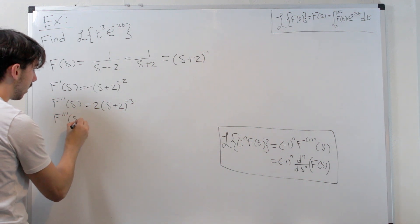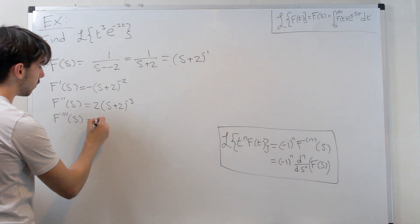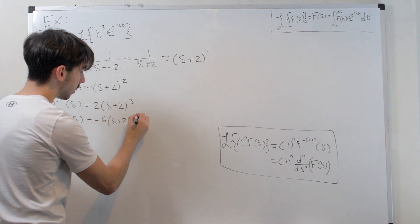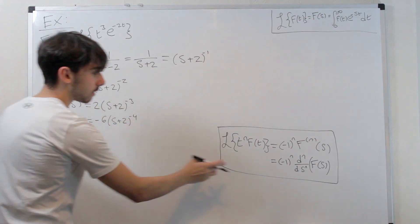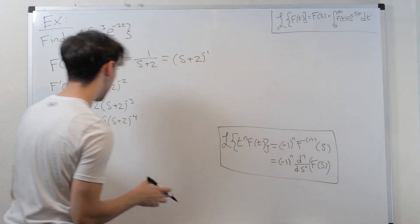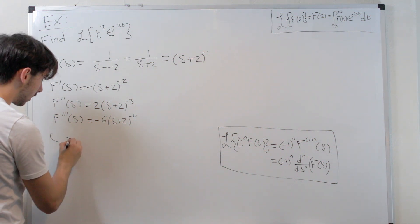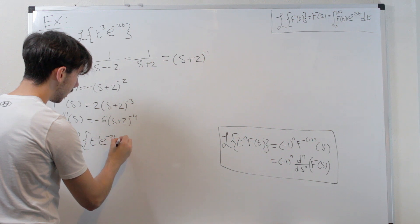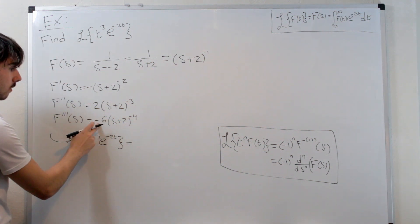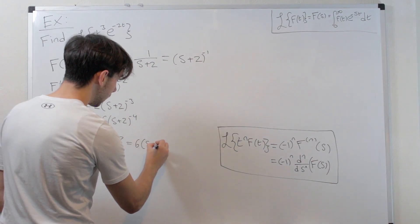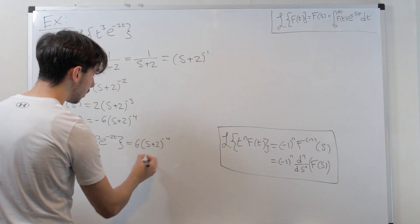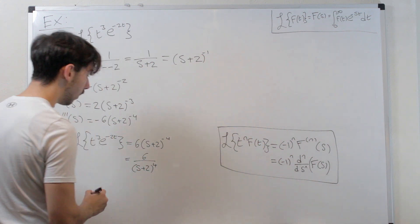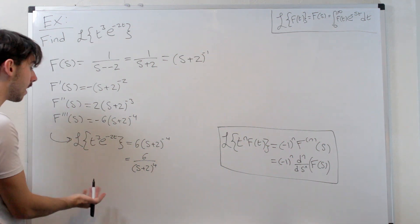And finally the third derivative of F of s: minus 3 times 2 is minus 6, derivative of the inside is 1, so we get minus 6 times s plus 2 to the minus 4. Then, because it's negative 1 to the power of 3 multiplied by that, the minus signs cancel, and what we end up with is that the Laplace transform of t cubed times e to the minus 2t is positive 6 times s plus 2 to the minus 4, which you could write as 6 divided by s plus 2 to the power of 4.